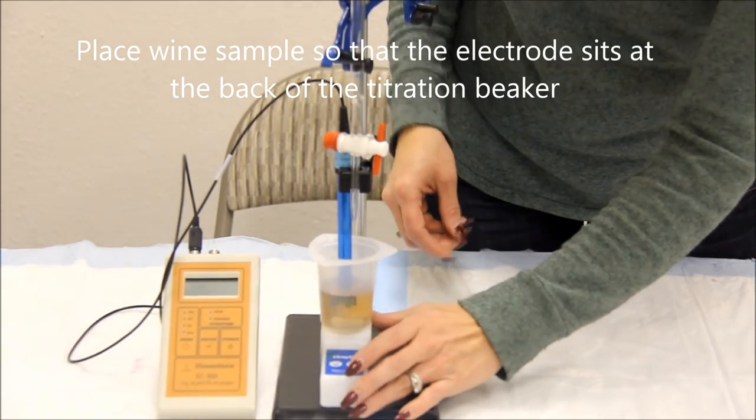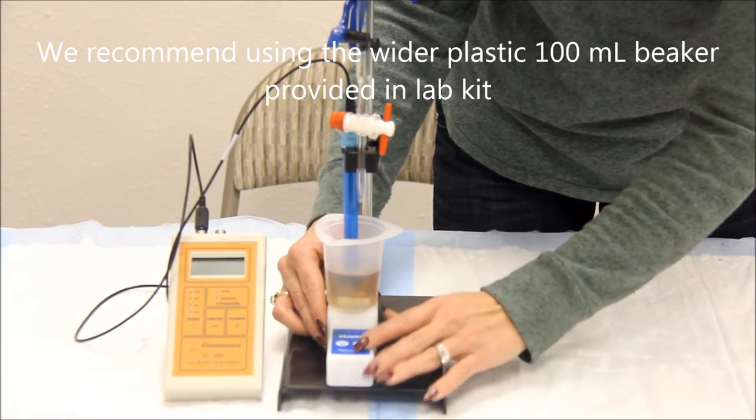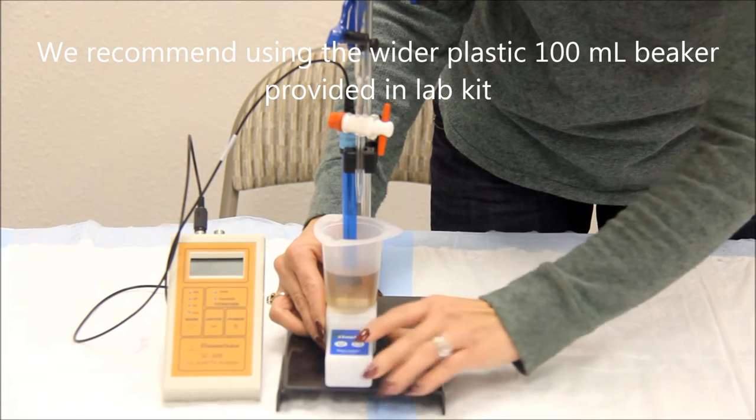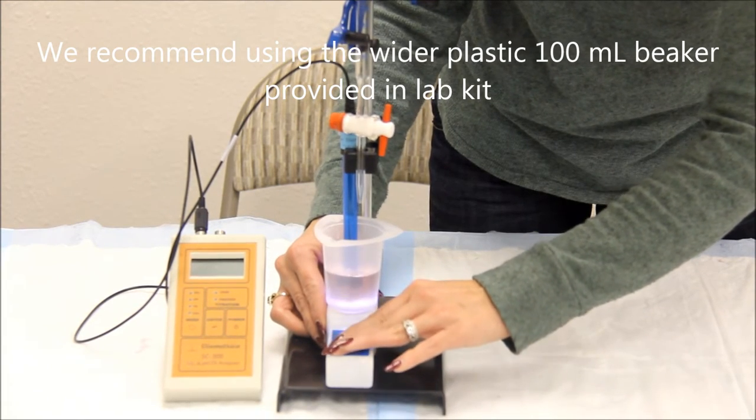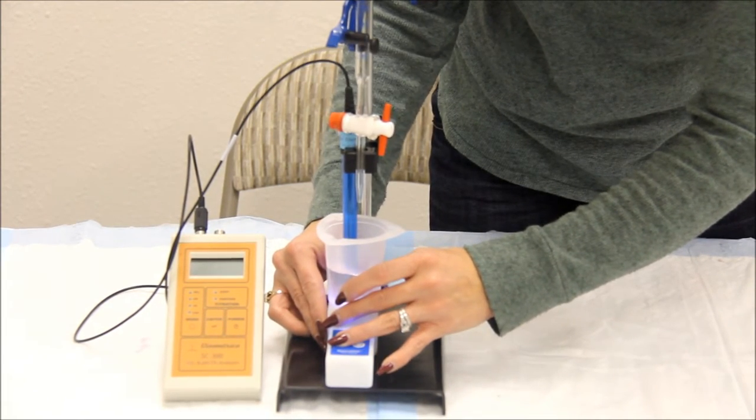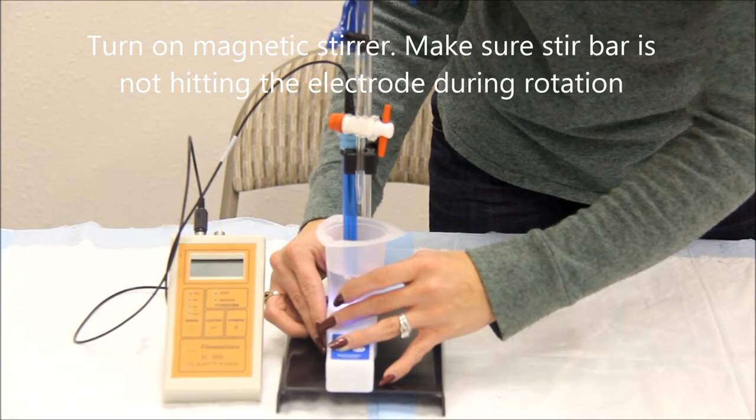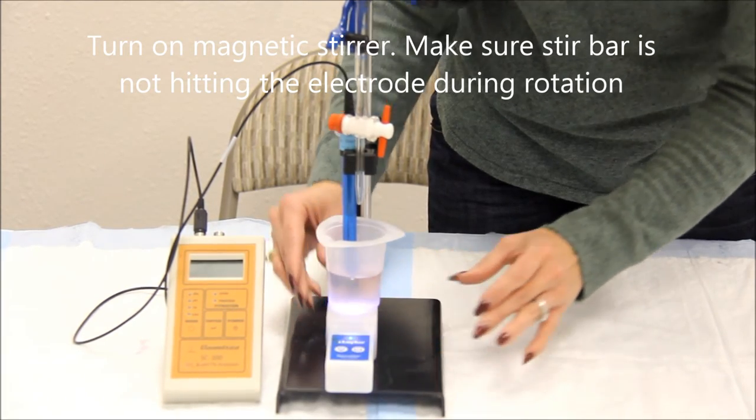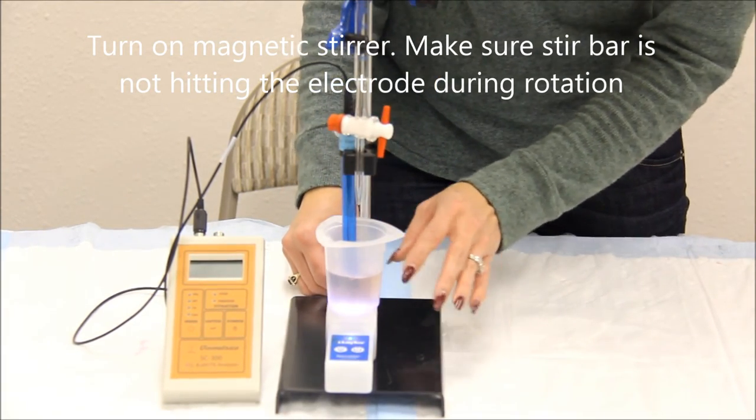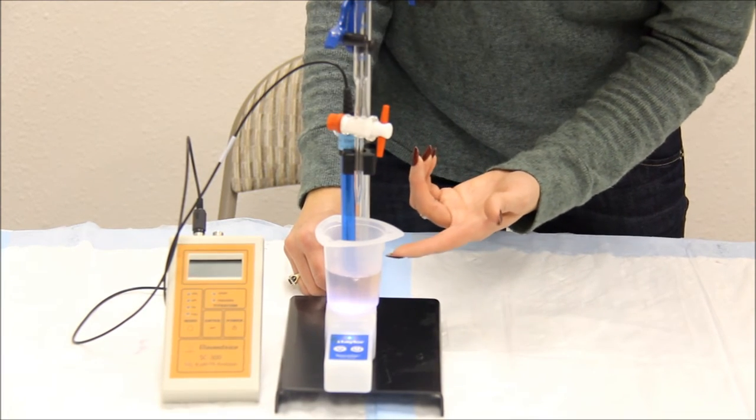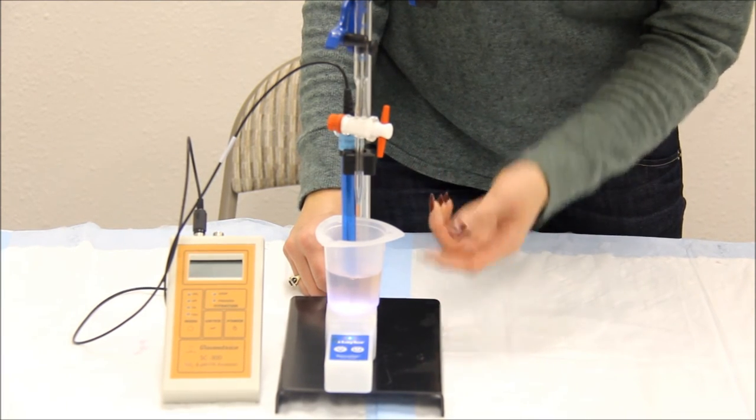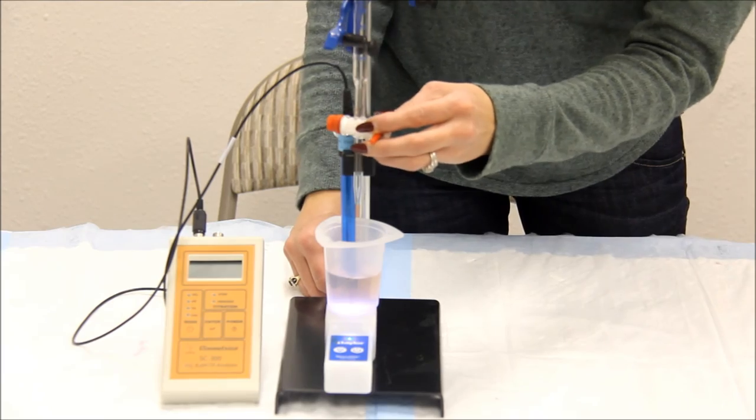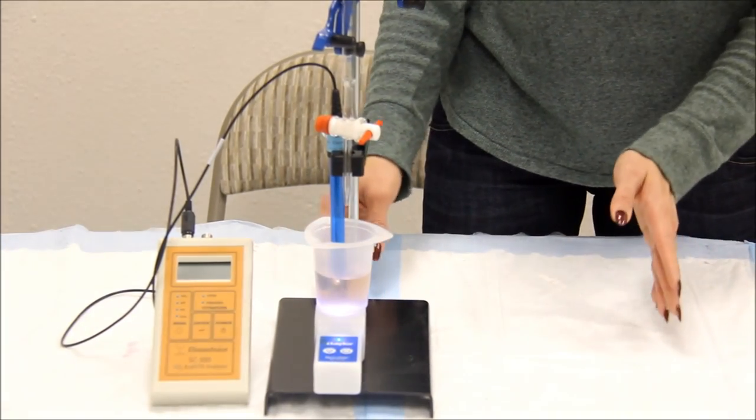You can turn your magnetic stirrer on by either hitting the power button or the light switch. Make sure the magnetic stirrer does not hit the electrode while it is mixing. You are now ready to begin any titration that you may need.